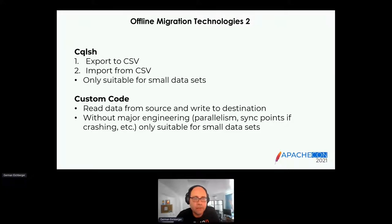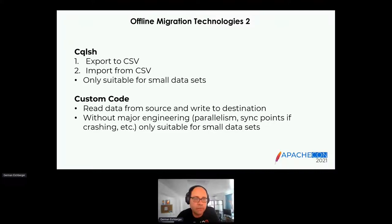Some customers simply use CQL shell, which can export and import via CSV. That works fine for small data sets, but it gets too slow and files get too large at scale. Others write custom code that reads from the source and writes to the destination. Custom code requires parallelization, sync points in case of crashes, and other engineering work — a naive loop is only suitable for smaller data sets.